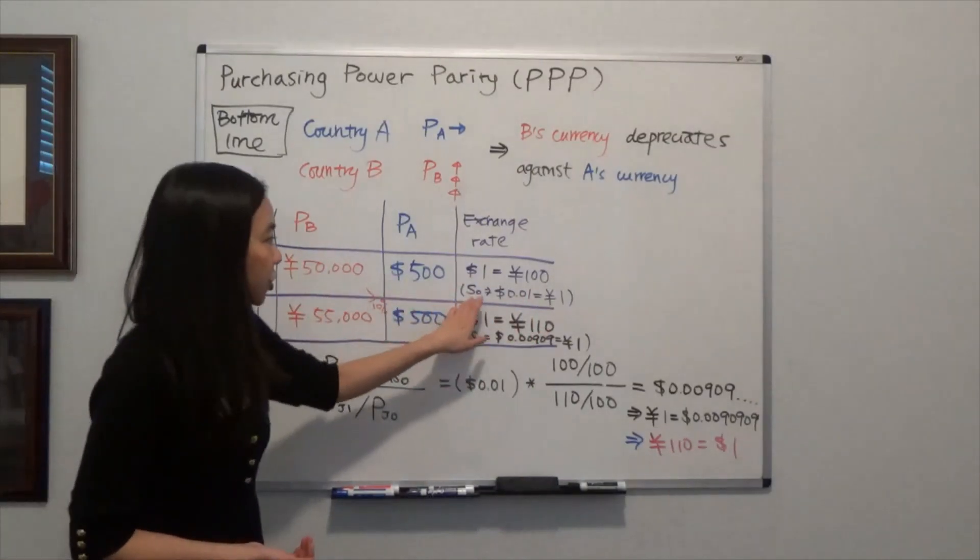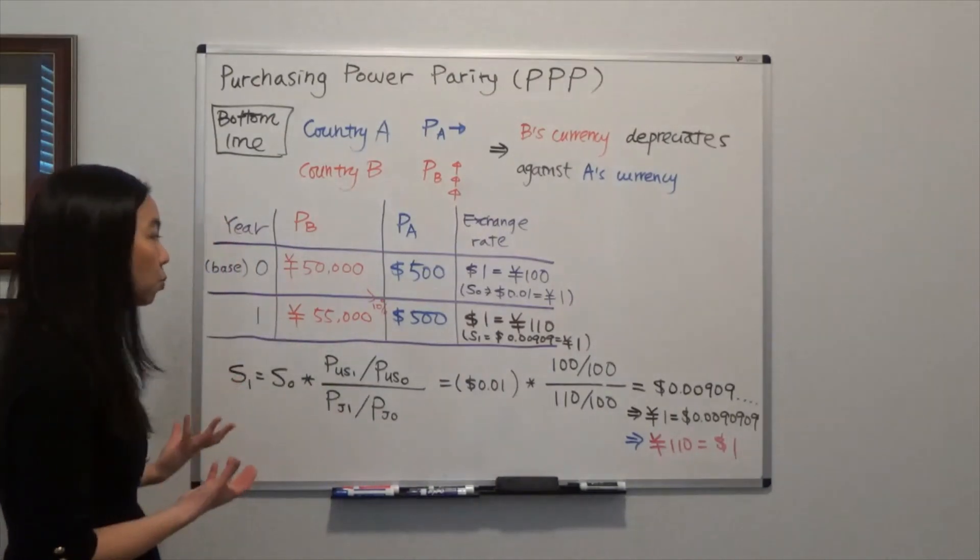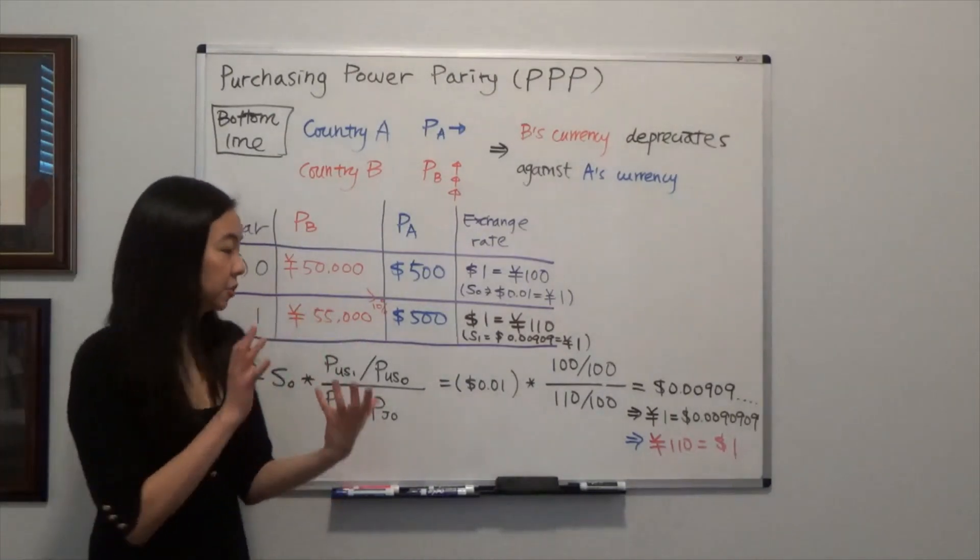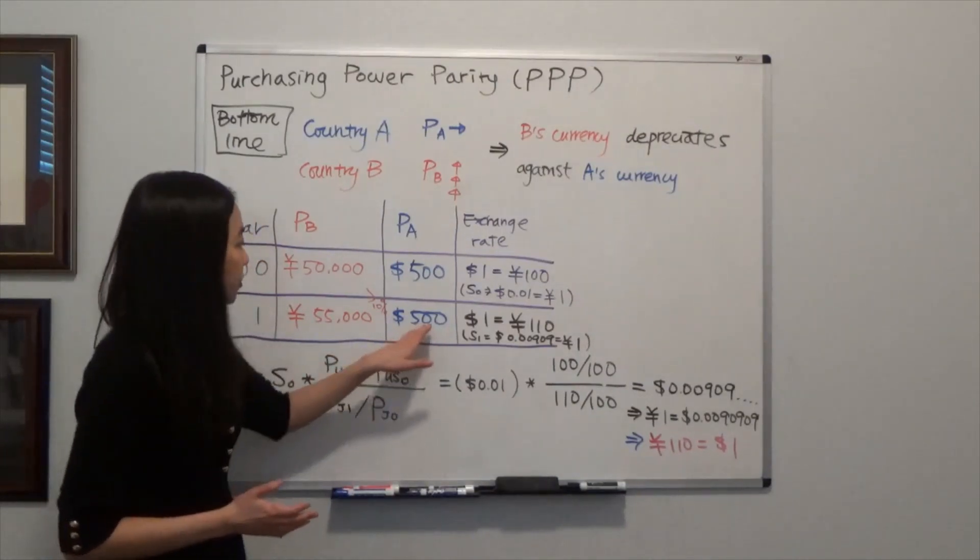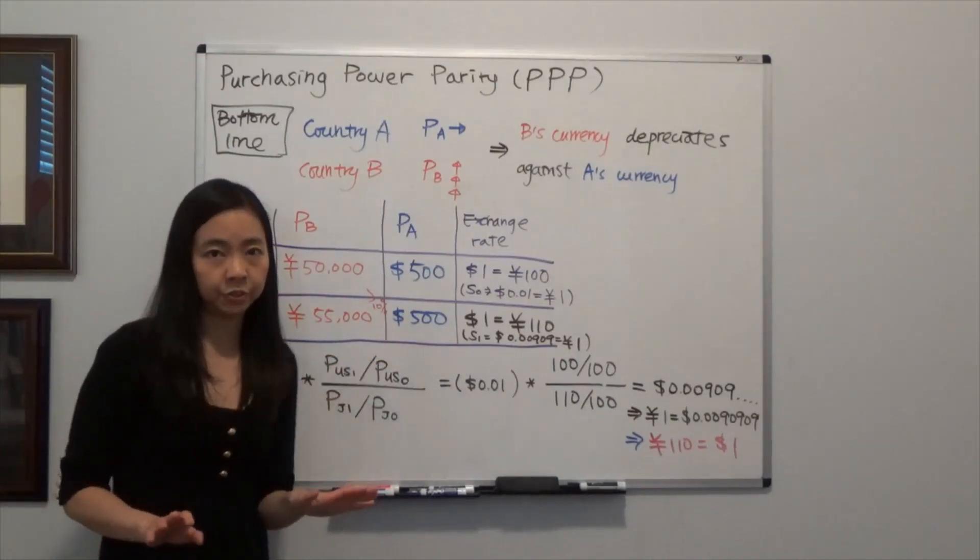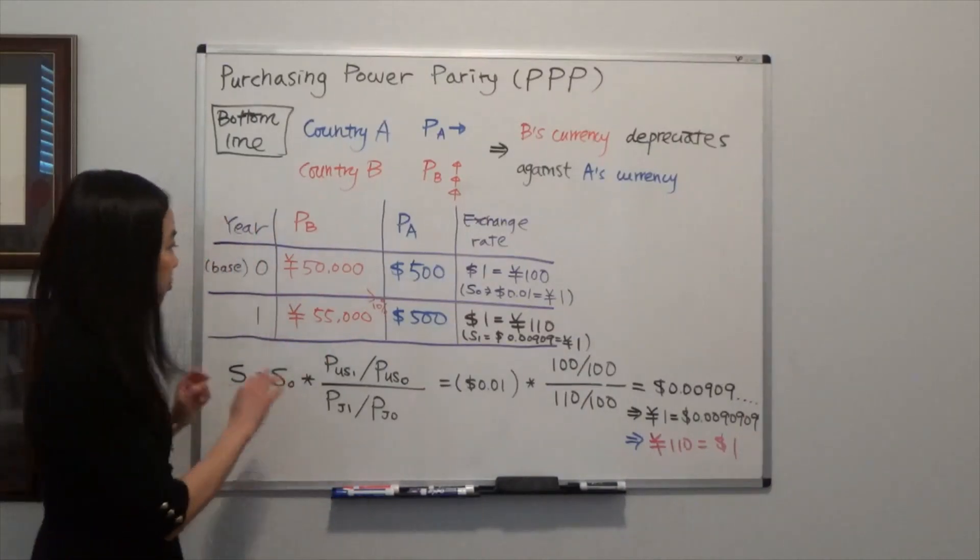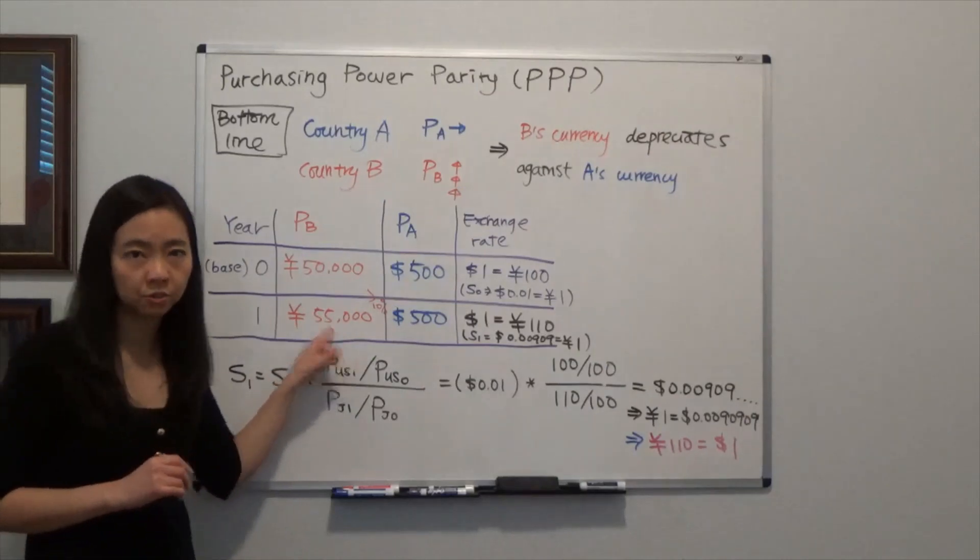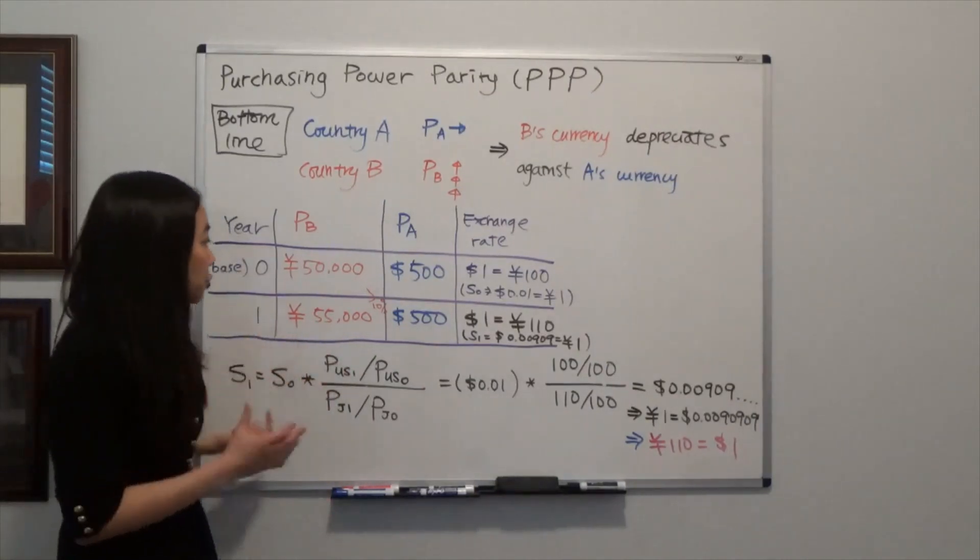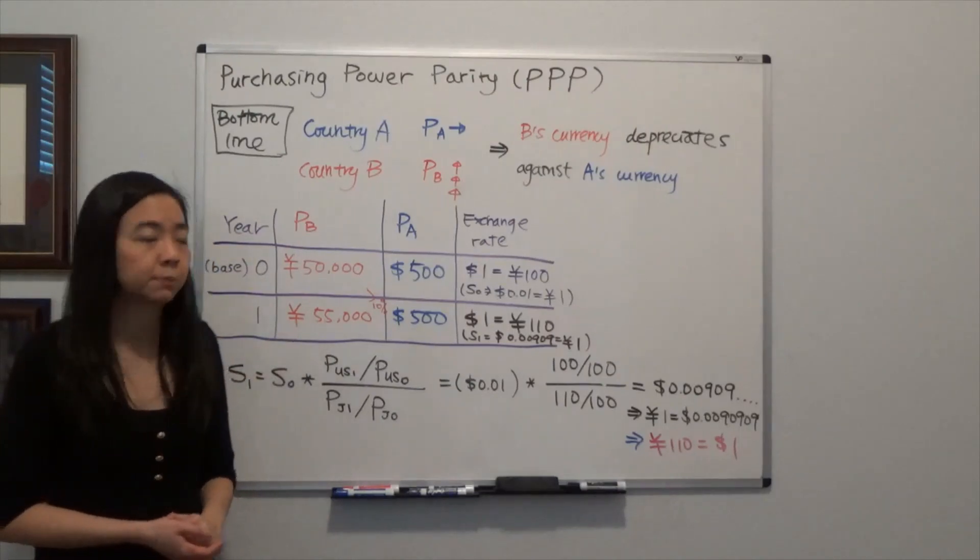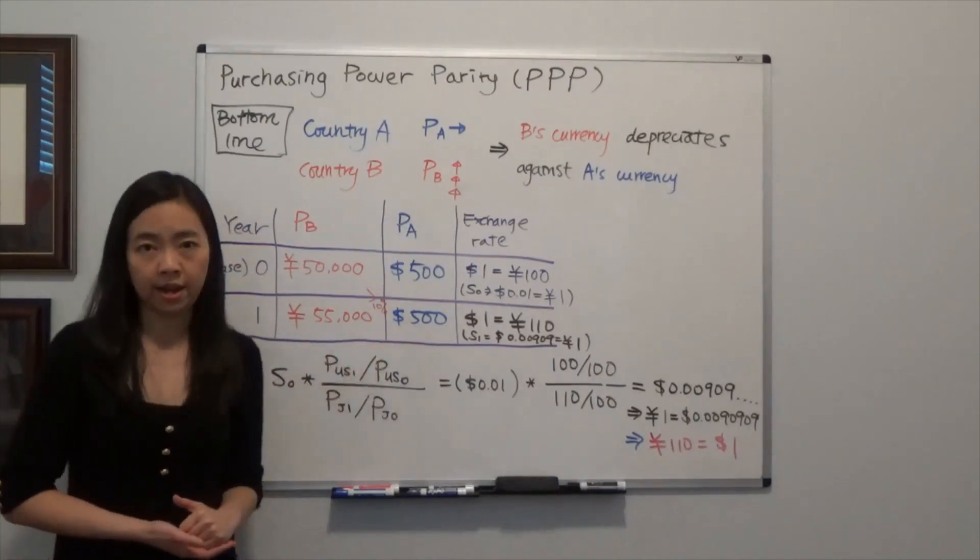So that's the exchange rate in year 0. What about year 1? Suppose in year 1, the same basket is still sold for $500 in the United States. So in the United States, there is no inflation. But in Japan, the same basket is now sold for 55,000 Japanese Yen. And the basket is exactly the same. So you know the price level has increased by 10% in Japan, whereas there is no inflation rate in the United States.